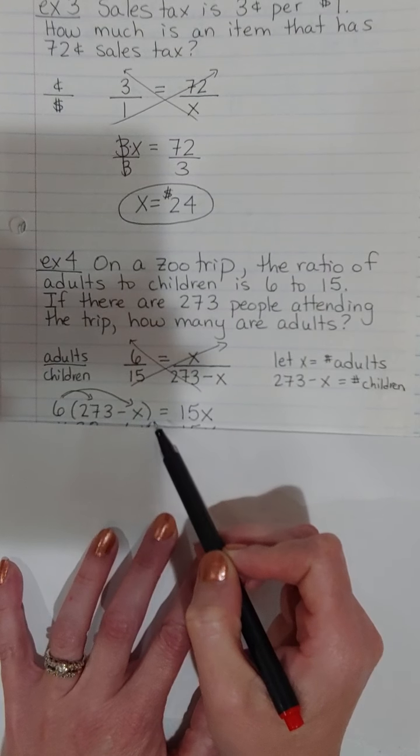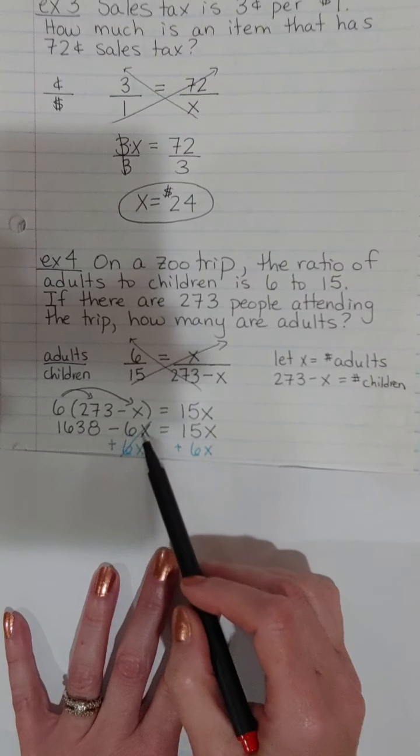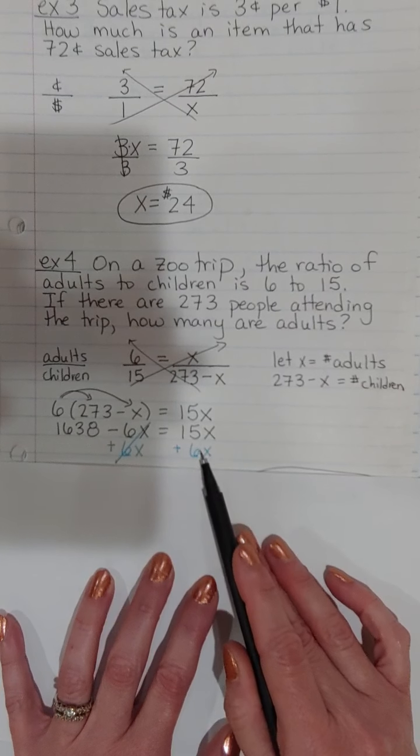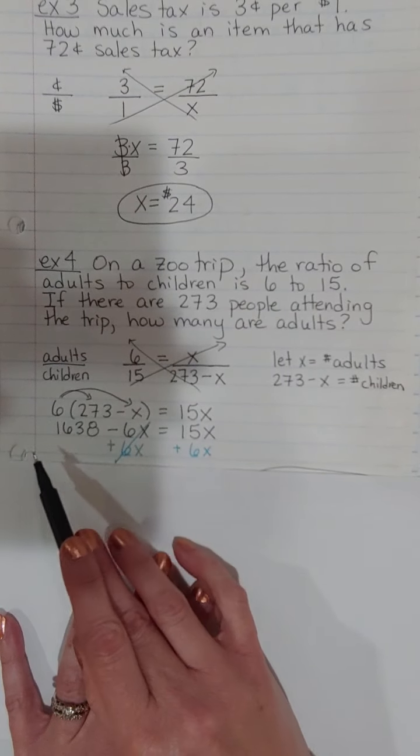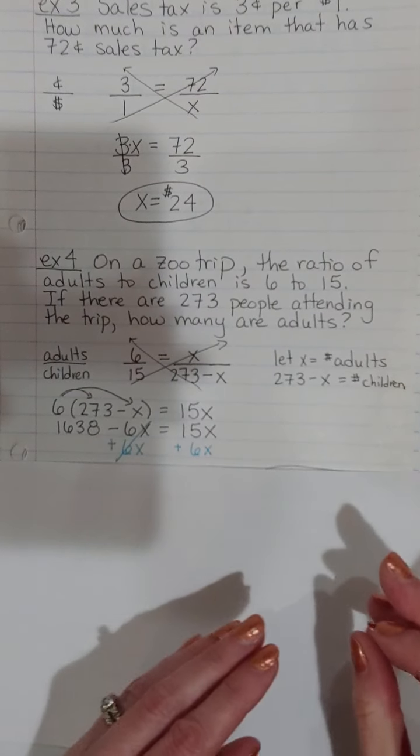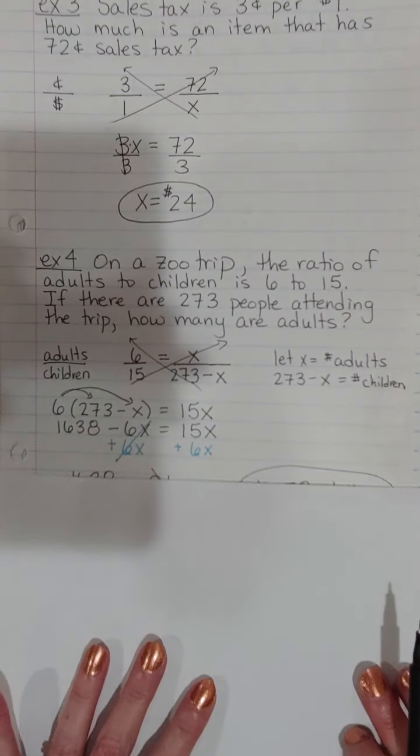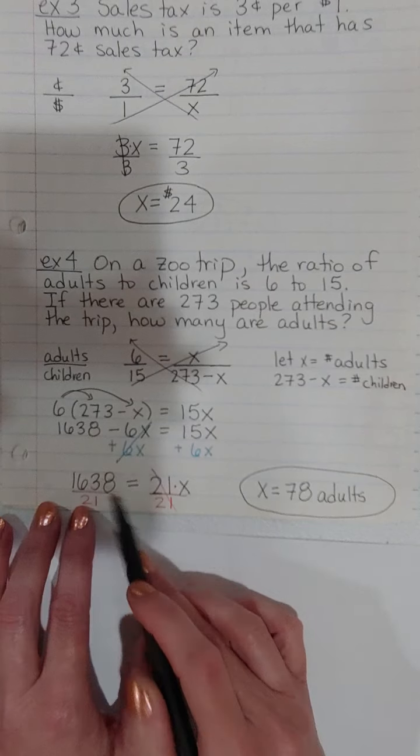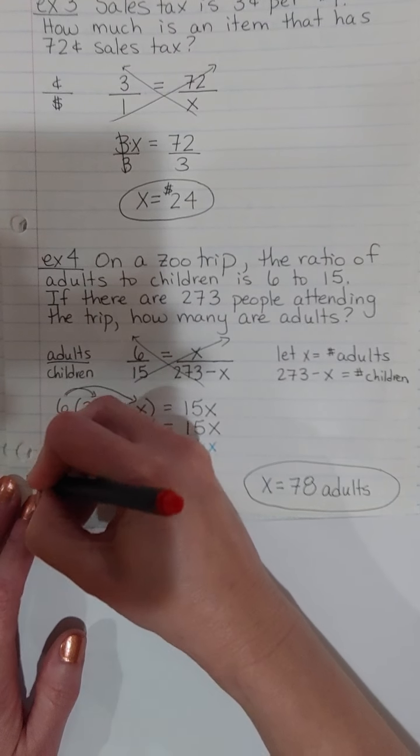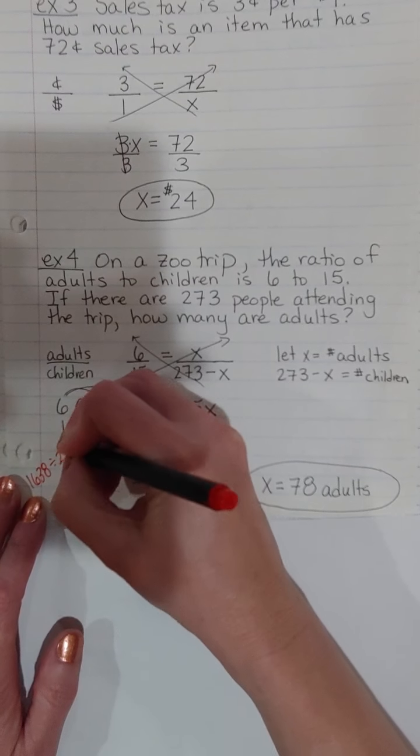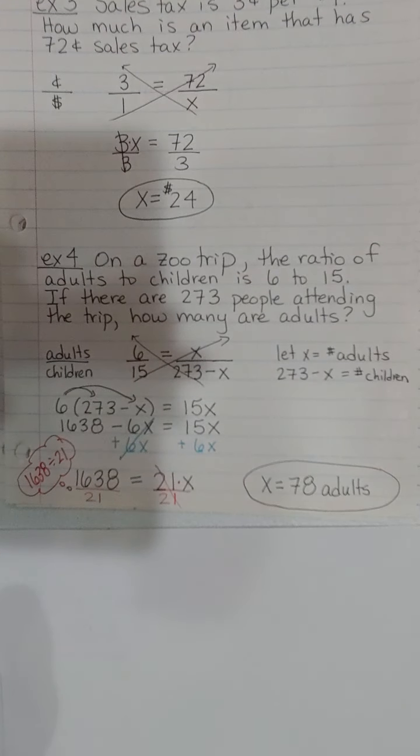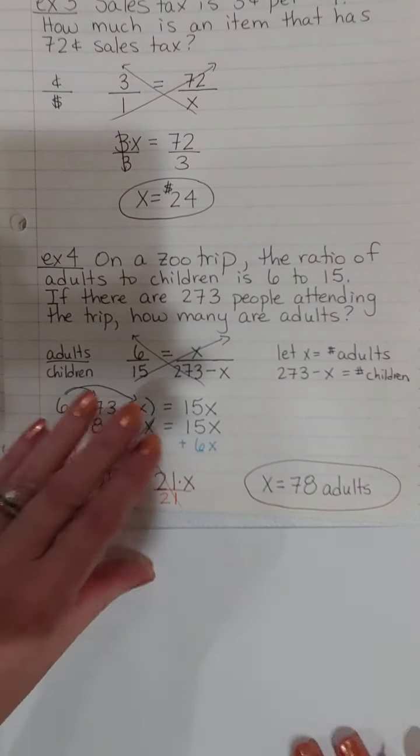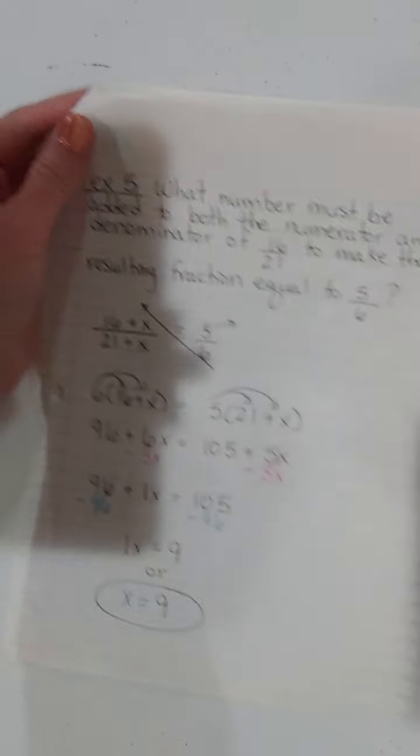Then we just have to cross multiply. We'll have to distribute that six. And we get this 1638 minus 6X. I'm going to get these X's on the same side. So I'm going to move this 6X over here. It doesn't matter as long as your variables are on one side and then your constants are on the other. And so we get 21X equals 1638. And then if you divide, that's 1638 divided by 21, so we get 78 adults.